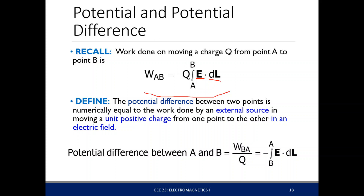The potential difference between the two points — let's define that — is basically just the work done by an external source. That's the work done by an external source in moving a one-coulomb charge, or a unit-positive charge, from one point to another in the presence of an electric field.